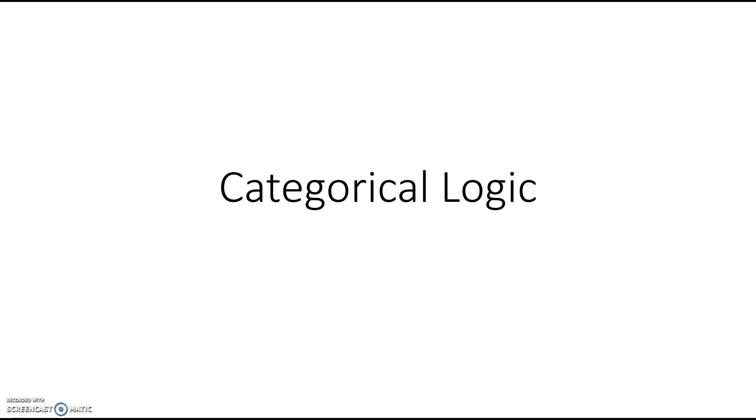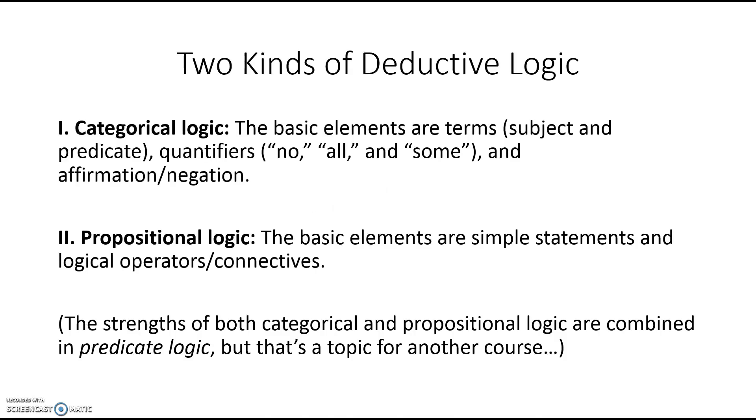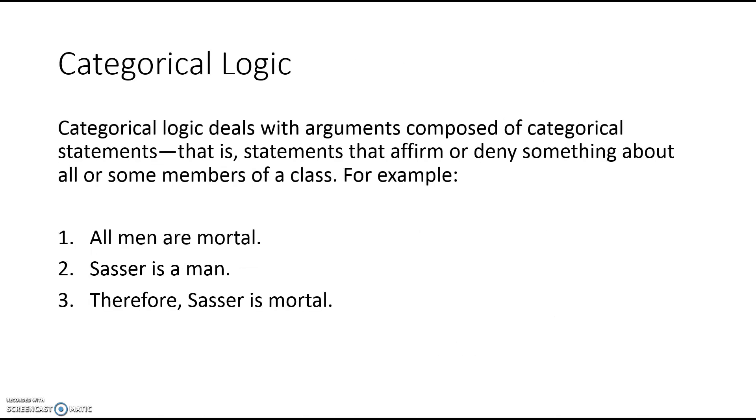Today we're talking about categorical logic. Later we'll talk about propositional logic. But categorical logic is logic that deals with arguments which are composed of categorical statements. Categorical statements are statements that affirm or deny something about all or some members of a class. For example, this argument is a categorical argument: All men are mortal. Socrates is a man. Therefore, Socrates is mortal. It's made up entirely of categorical statements.